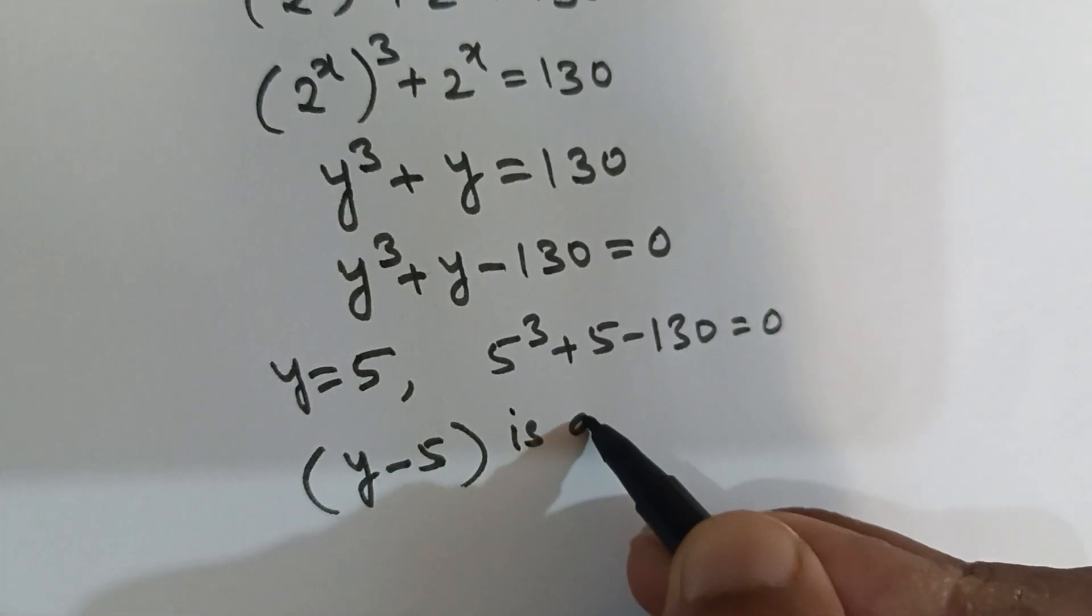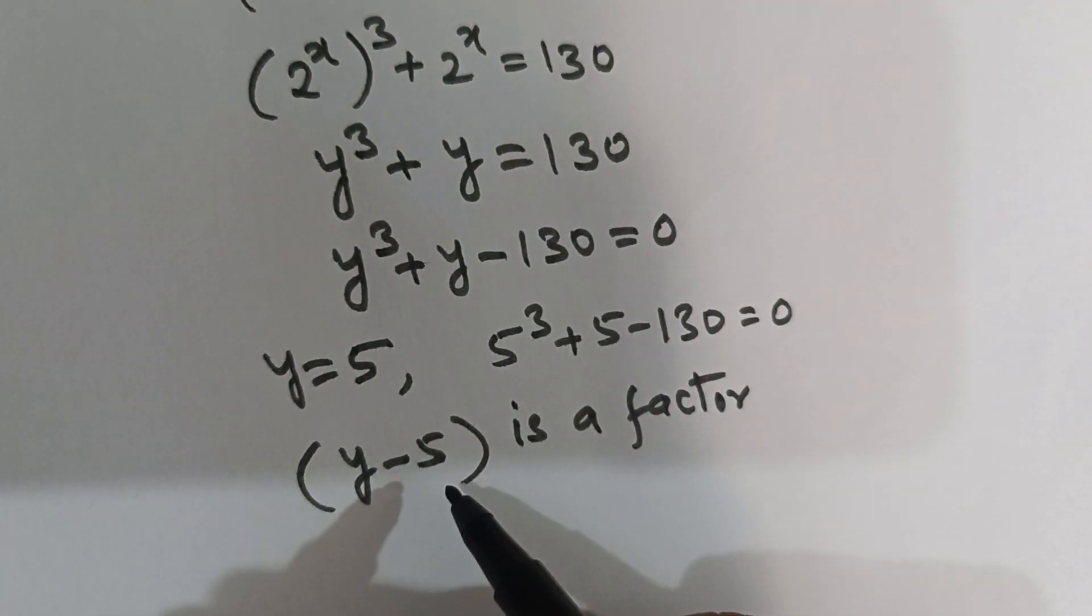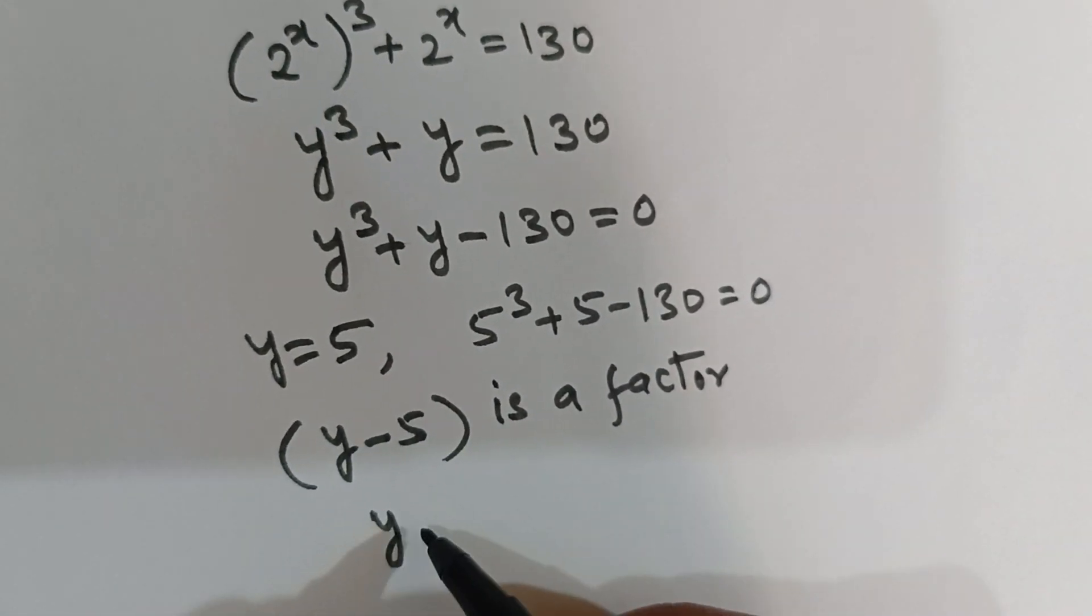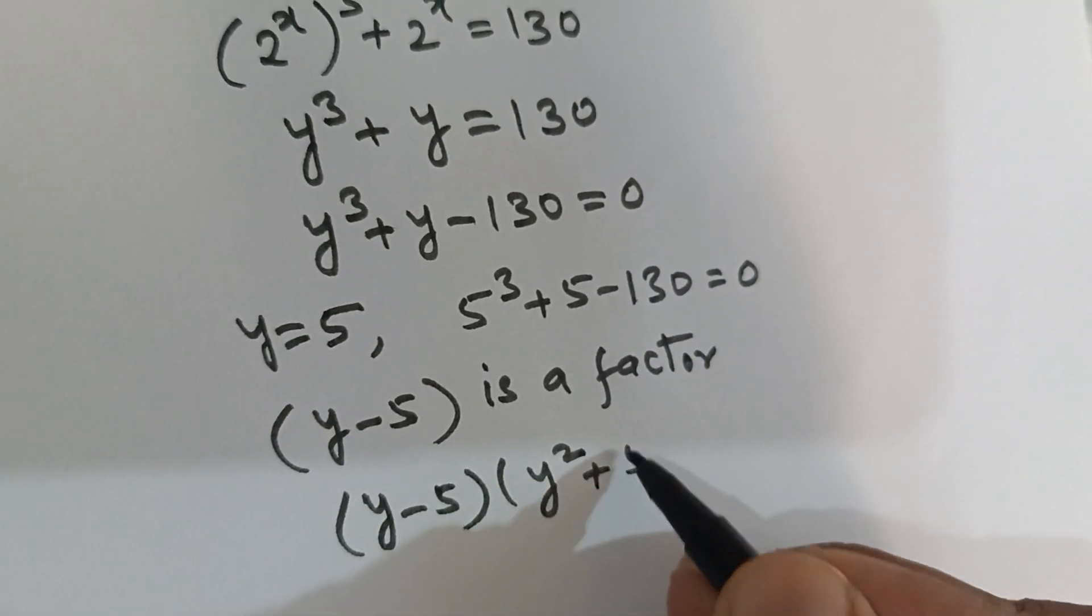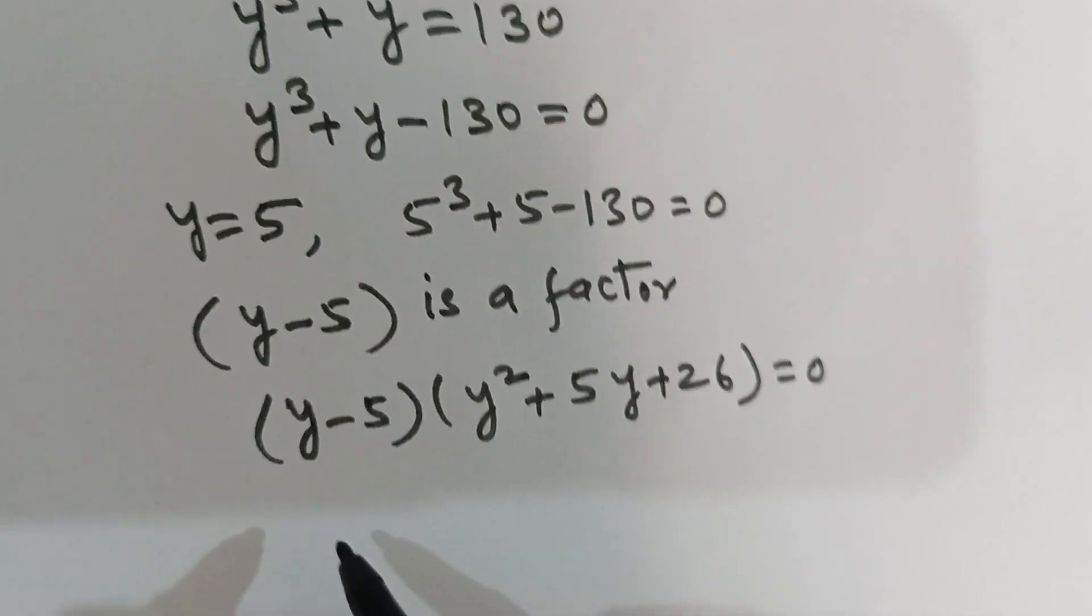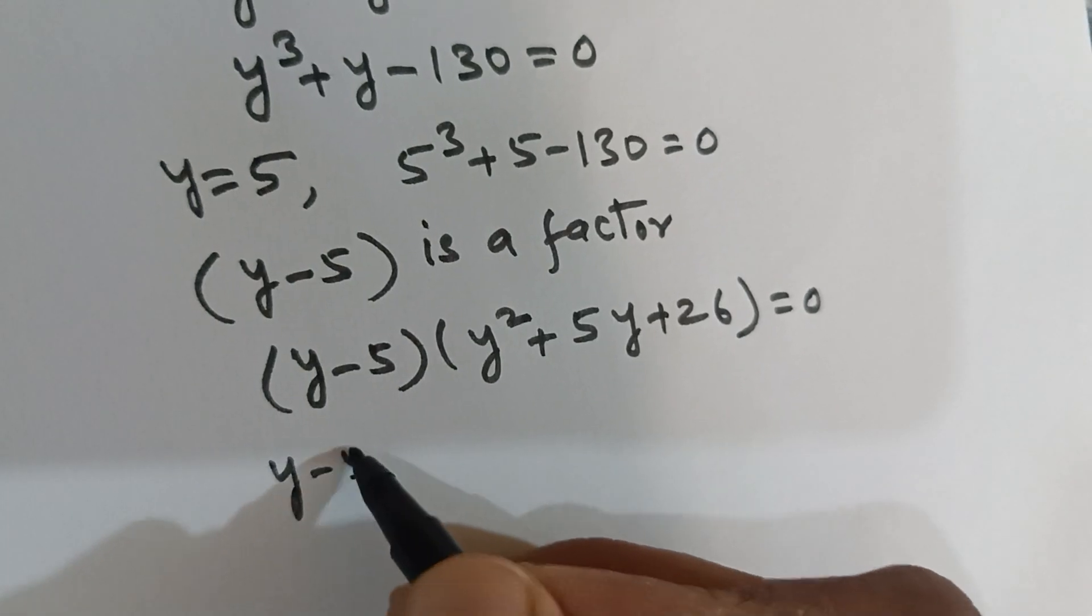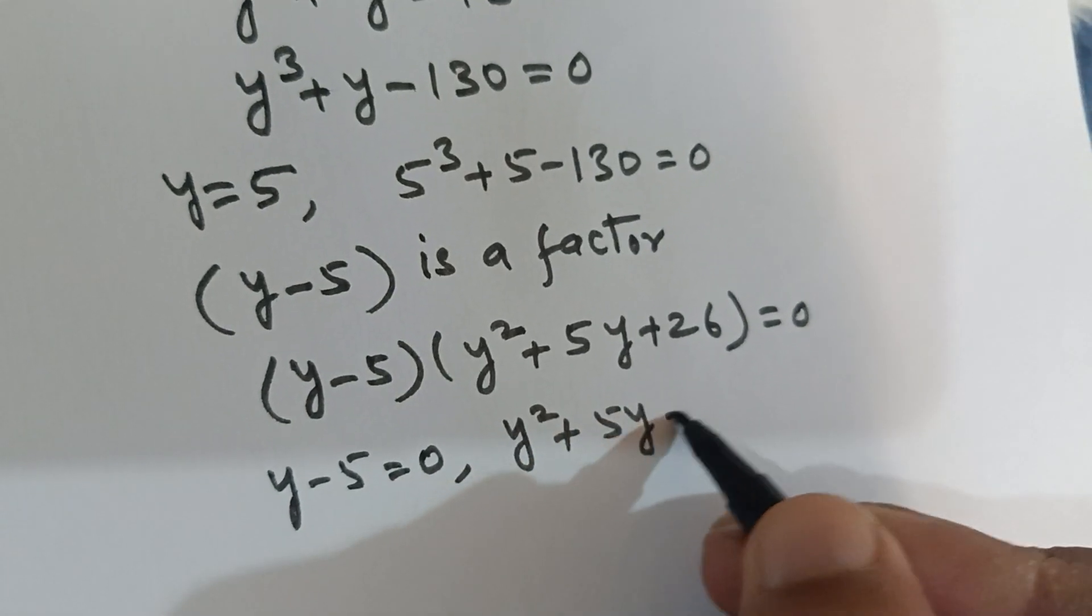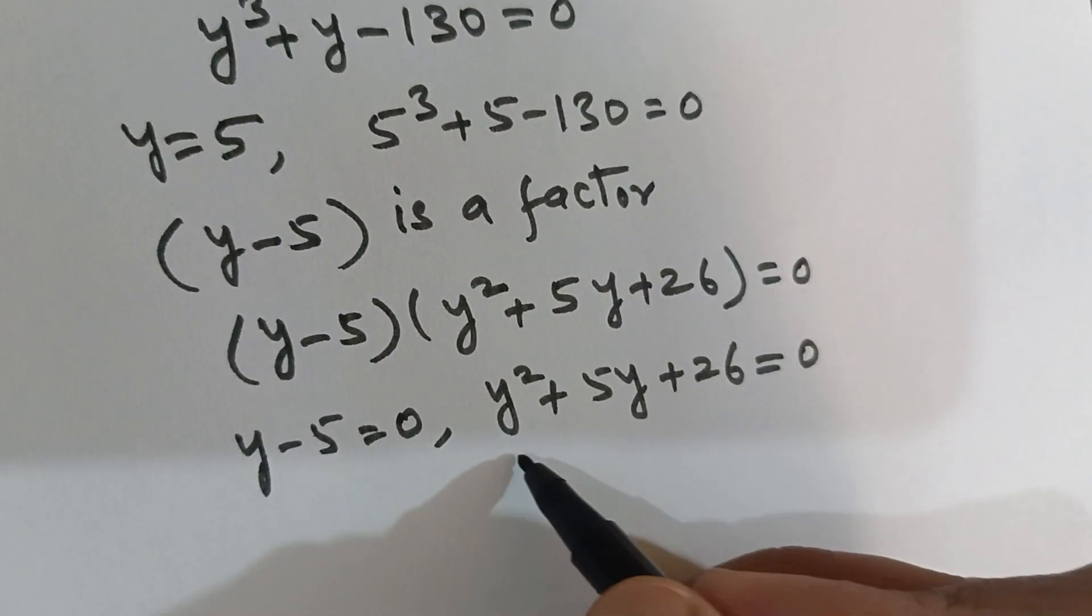So by the method of factorization, I can factor it easily. You can do it for yourself. Here I get either (y - 5) = 0 or y^2 + 5y + 26 = 0. For this quadratic equation...